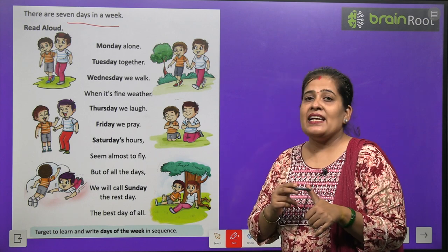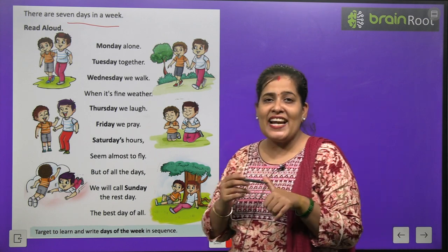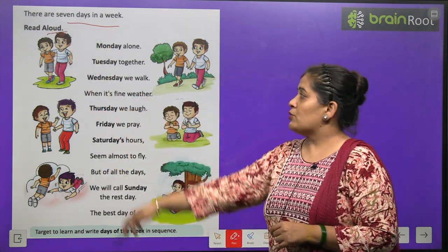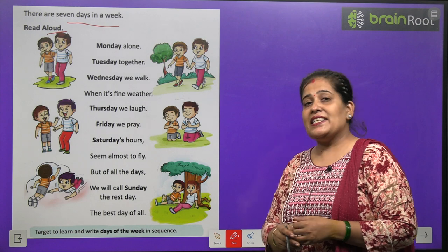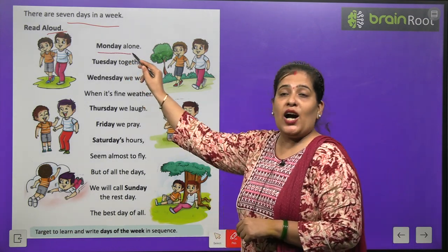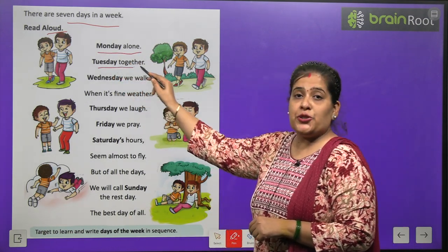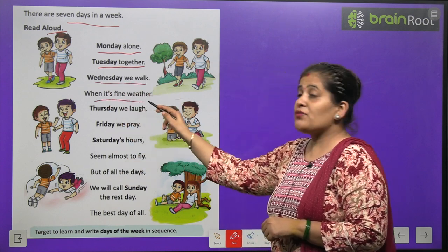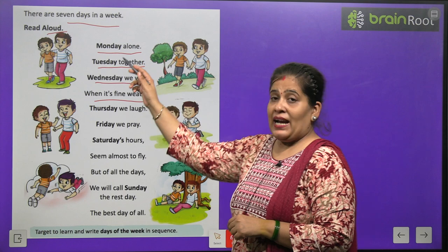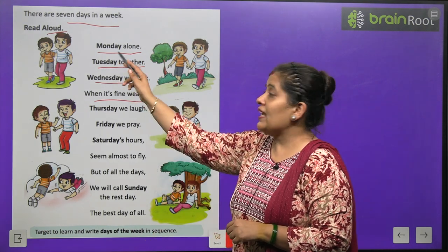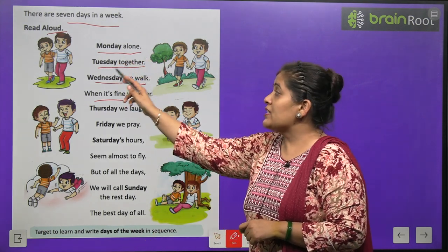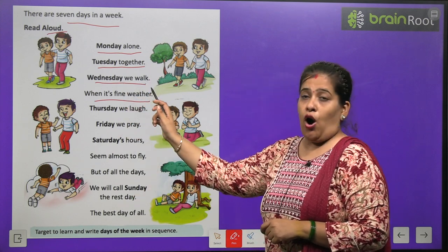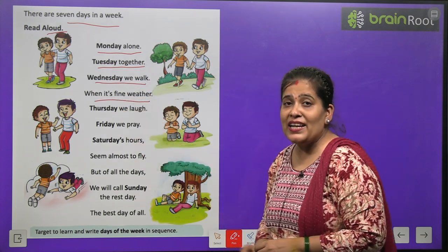And the last one is Sunday. Now read aloud. Toh hum isko read karenge. Let's start: Monday alone, Tuesday together, Wednesday we walk when it's fine weather.